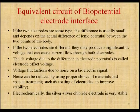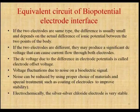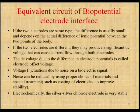The equivalent circuit of the biopotential electrode at the interface: if two electrodes of the same type are used, the difference between them will be very small. The actual difference of ionic potential between two points of the body is then measured. When two electrodes of different types are used, they produce a significant DC voltage. This DC voltage due to the difference in electrode potential is called the electrode offset voltage. Any fluctuations and voltage variations produced during measurement are considered noise or distortion in the biopotential signals.